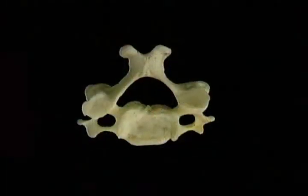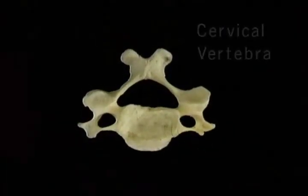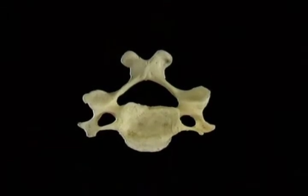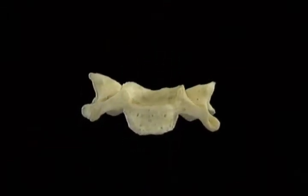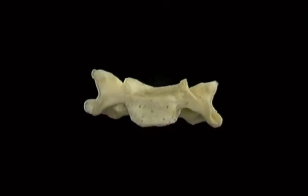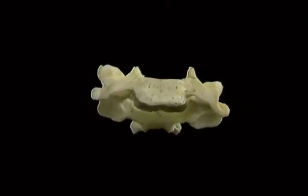Now that we've looked at one vertebra, let's look at the specialized and different features of vertebrae from the cervical, thoracic, and lumbar parts of the spine. Here's a typical cervical vertebra — the fourth one. The body is small. The upper surface of the body is curved, somewhat in the shape of a saddle. The lower surface has the same curvature in reverse.